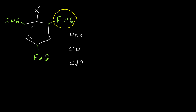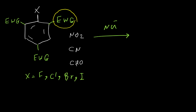This type of aryl halide can react with a nucleophile, and the nucleophile can expel the leaving group. The leaving groups normally in this reaction are fluorine, bromine, and iodine.